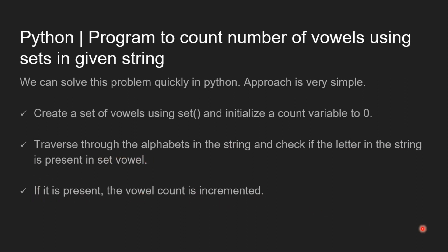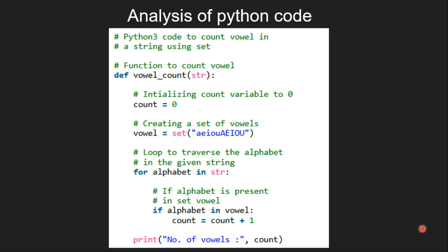So let's have a look at the implementation of this Python code. We have first user defined function which takes one argument that is string. Then we initialize count variable to 0.